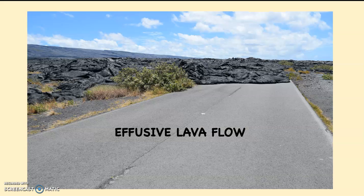Take a look at this photograph from the Big Island of Hawaii. That road was built something like four decades ago. You can see that there's solidified lava on top of it. Which is older — the road or the lava? The road. So that means that lava flow is less than 40 years old.